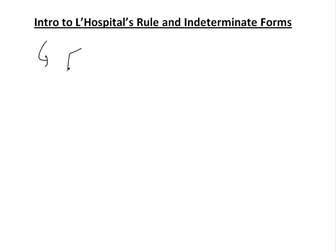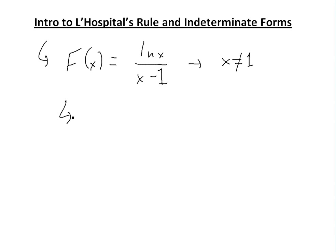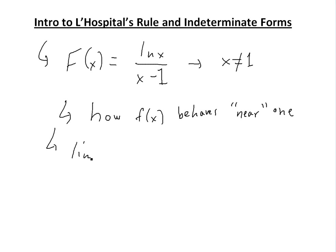Let's start off with a function: f(x) = ln(x) / (x - 1). As you can see, this one is clearly not defined for x = 1, because if you put it there, you're going to have something divided by 0. But let's say we want to know how it behaves near 1 — what is the limit as x approaches 1 of ln(x) / (x - 1)?